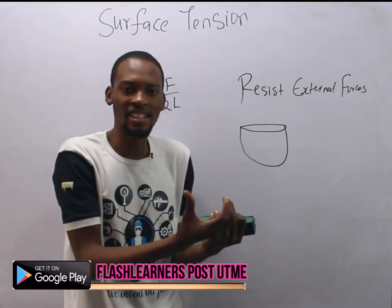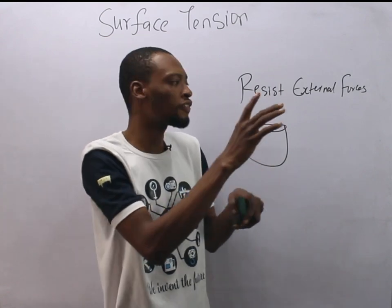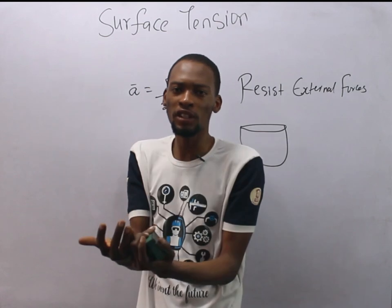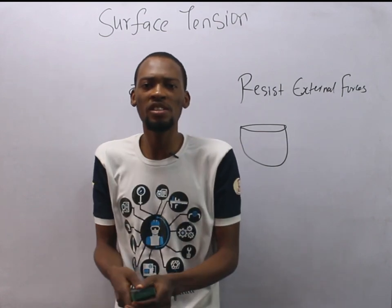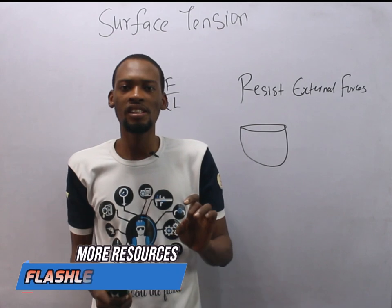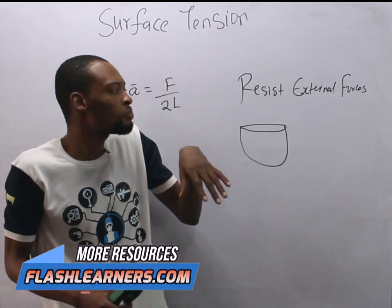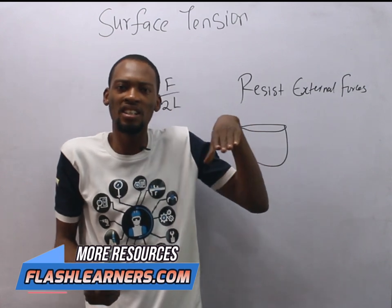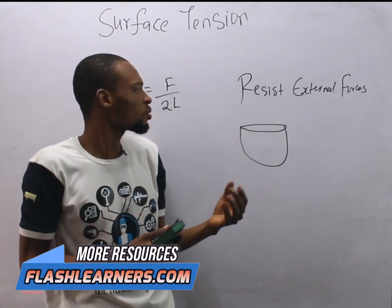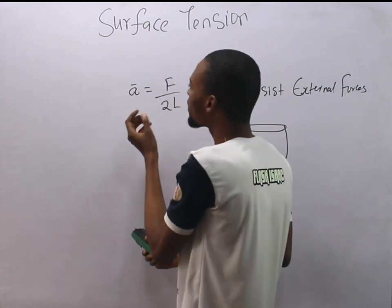Look at insects — they can walk on top of water without sinking. This is because of the surface tension of water. So in summary, surface tension is a phenomenon that exists in water or in liquid generally, making it behave as if it is covered by an elastic skin. To calculate surface tension, it is simply force over 2L.